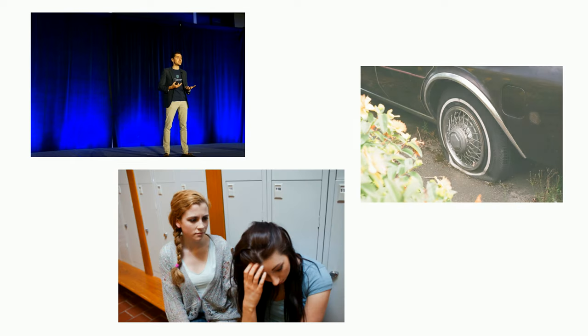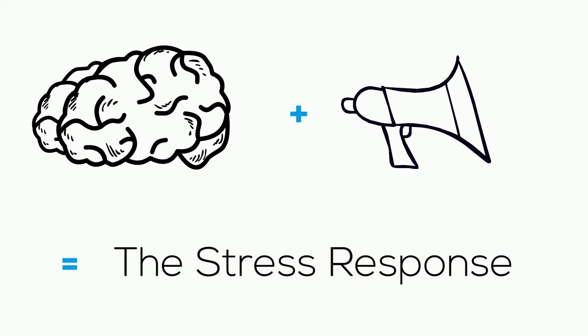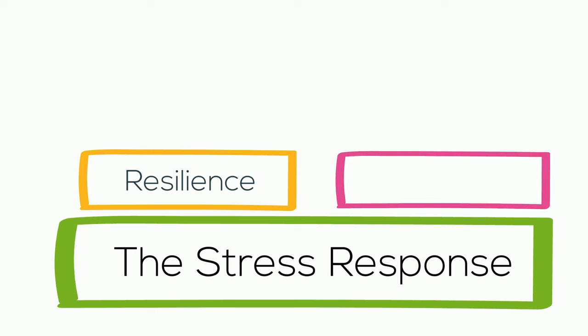For example, we might have an upcoming presentation to give, or we may have had conflict with a friend, or had a flat tire. When this happens, our brain sends us a signal. It's called the stress response. Our stress response is the basis of resilience and adaptation.